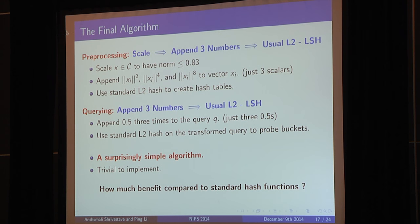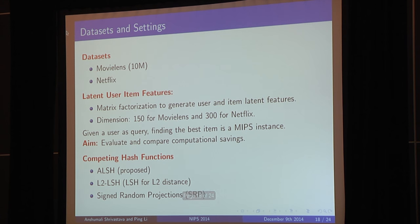And so now it's interesting to see if I'm modifying L2 LSH by this small amount, how much benefits do I get in practice? So here is the data set and setting. We use the standard collaborative filtering data set, which is MovieLens, the largest one, 10 million, the Netflix. And we use standard matrix factorization techniques with standard recommendation of the latent dimension to generate user and item features. Now given a user query, our task is to find the best item, which is a MIPS instance, and we want to evaluate how much savings we obtain in practice. For comparison, we are using the proposed hash function, the L2 LSH, which we slightly modify and make it our new hash function, and another popular hash function in practice, which is the signed random projections.